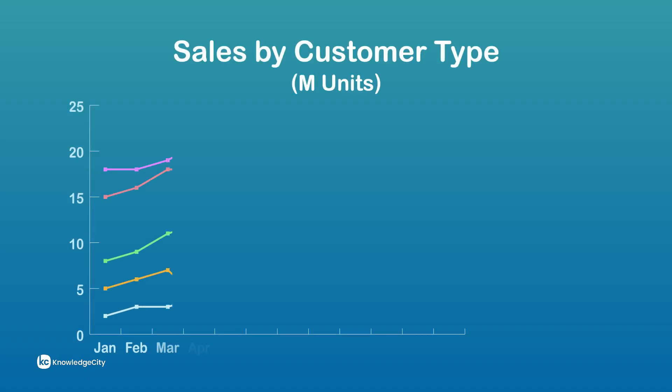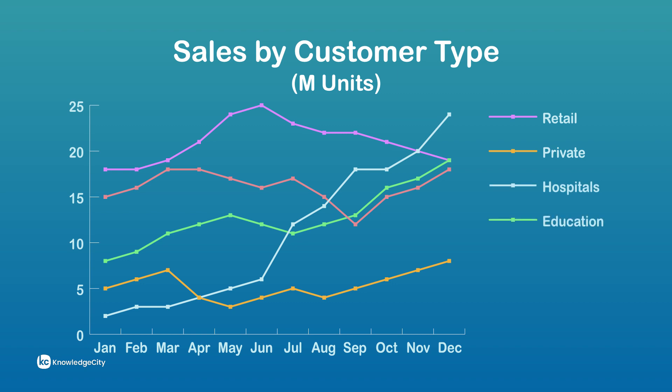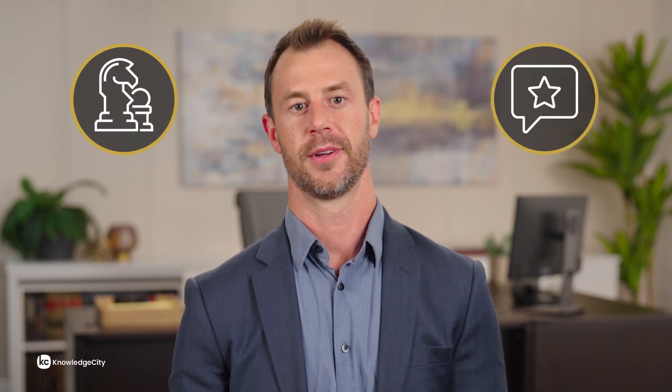For example, can you categorize your customers by type? Perhaps you manufacture office furniture and sell it to many organizations such as retailers, private businesses, hospitals, educational institutions, and the government. You will likely develop different marketing strategies and messaging for each customer group. Monitoring them individually helps gain insight into how they can be managed.